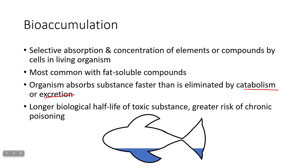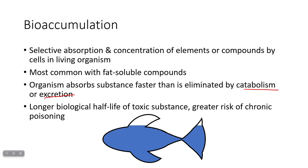An organism sits in an environment, and the blue line represents the amount of whatever pollutant or chemical we're looking at. Over the course of the organism's lifetime, it absorbs more and more from the environment so that the concentration in its body is higher than what's in the environment. The longer the half-life of the substance, the greater the risk of poisoning, because it lingers longer both in the environment and in the organism.